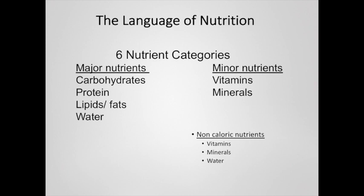When we talk about nutrition we talk about six different nutrient categories. There are the major nutrients which encompass carbohydrates, protein, lipids — also known as fats — and water. Then there are the minor nutrients which are vitamins and minerals. They're called minor nutrients because you need smaller quantities of them, not because they're less important.